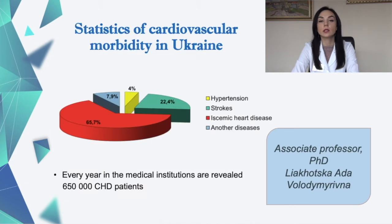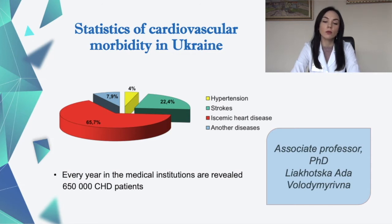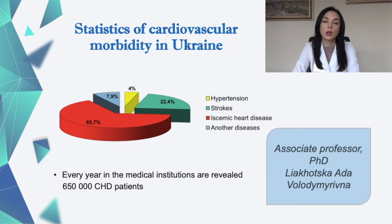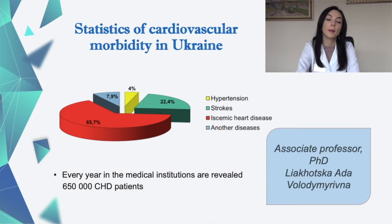In this picture you can see the statistics of cardiovascular morbidity in Ukraine. Ischemic heart disease holds the leading position in patient morbidity, and every year in medical institutions, 650,000 coronary heart disease patients are revealed.